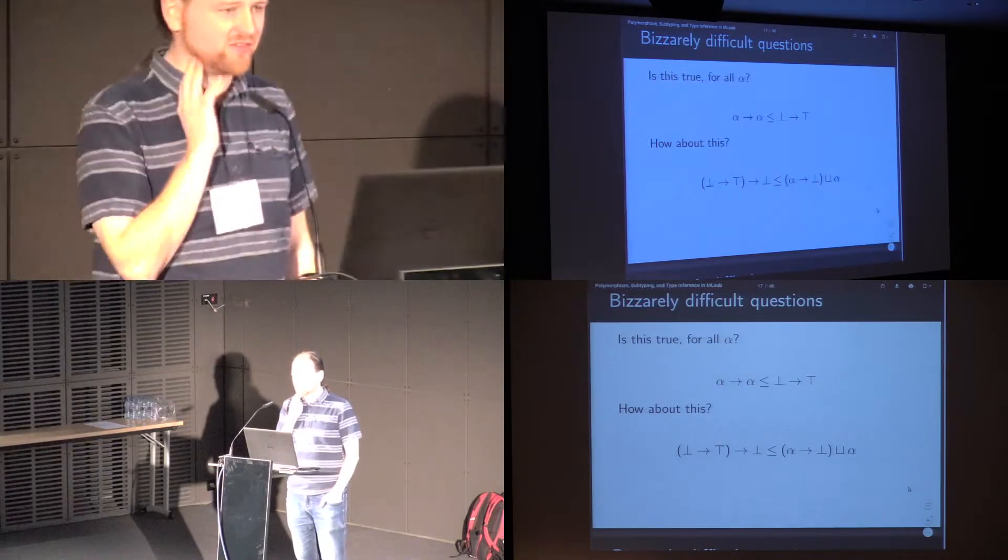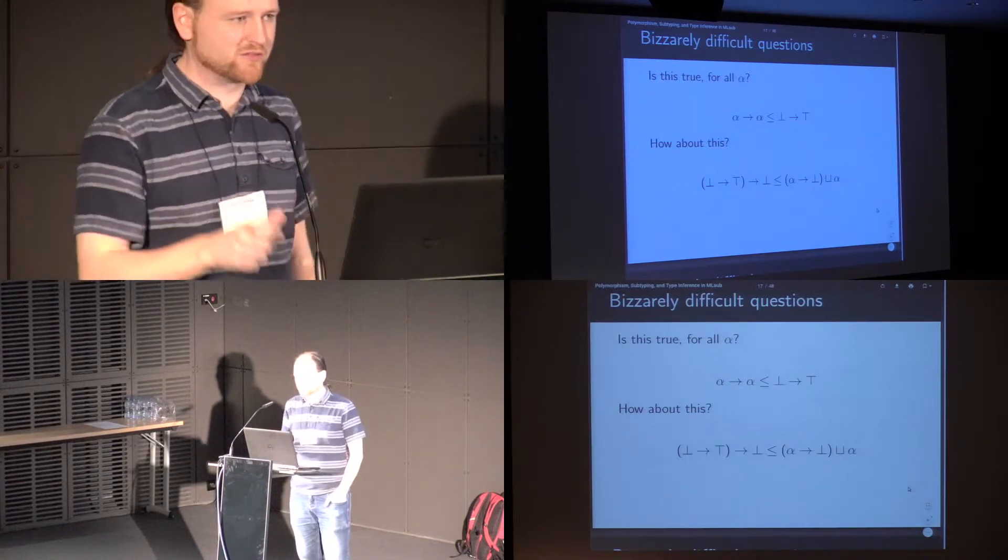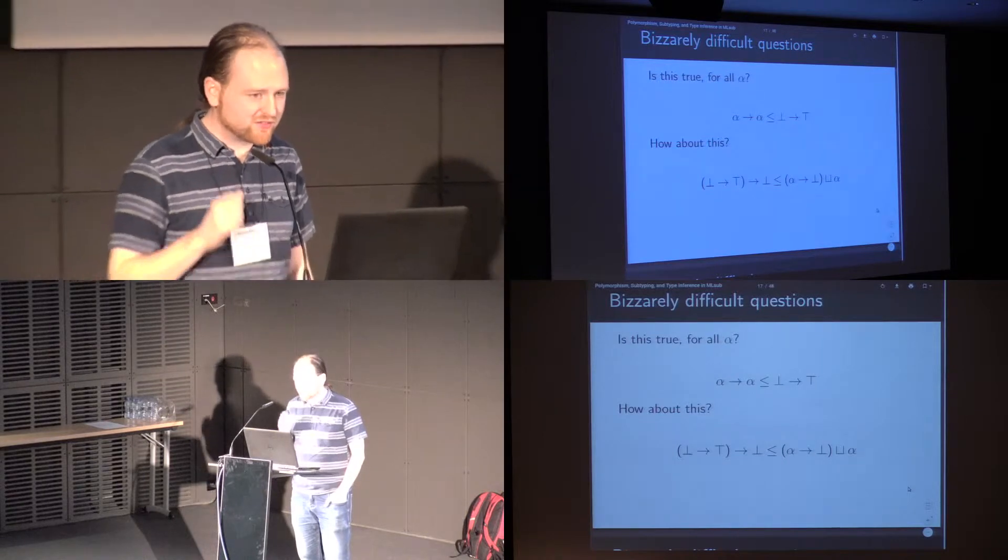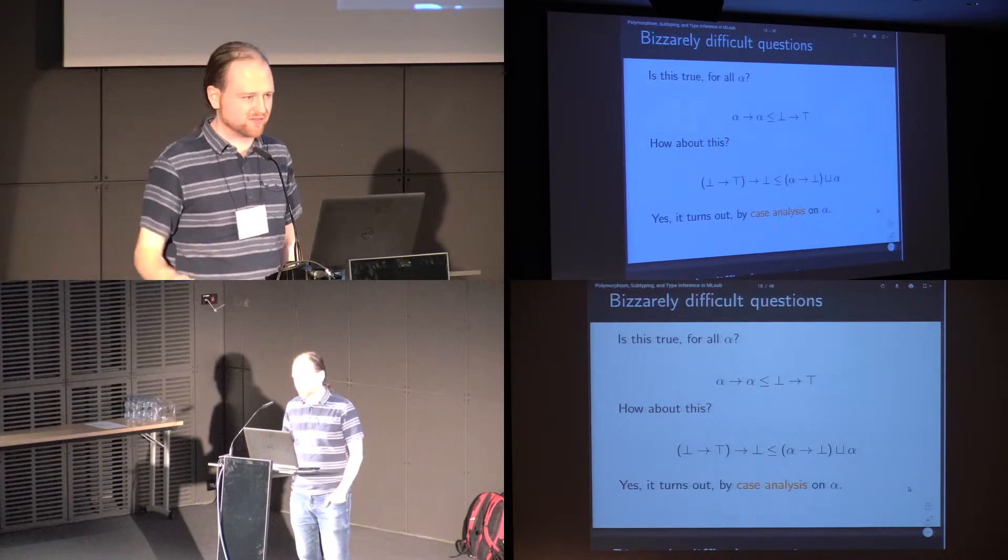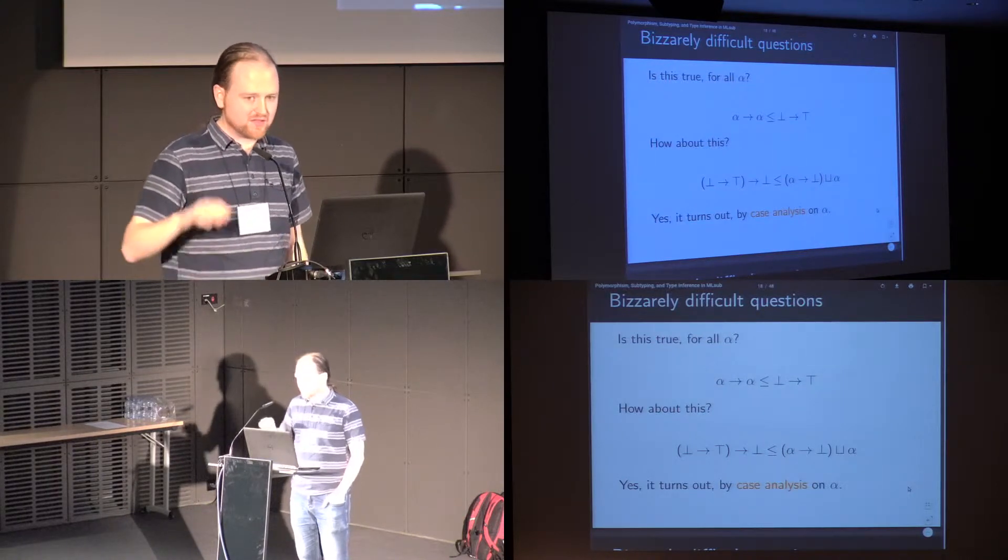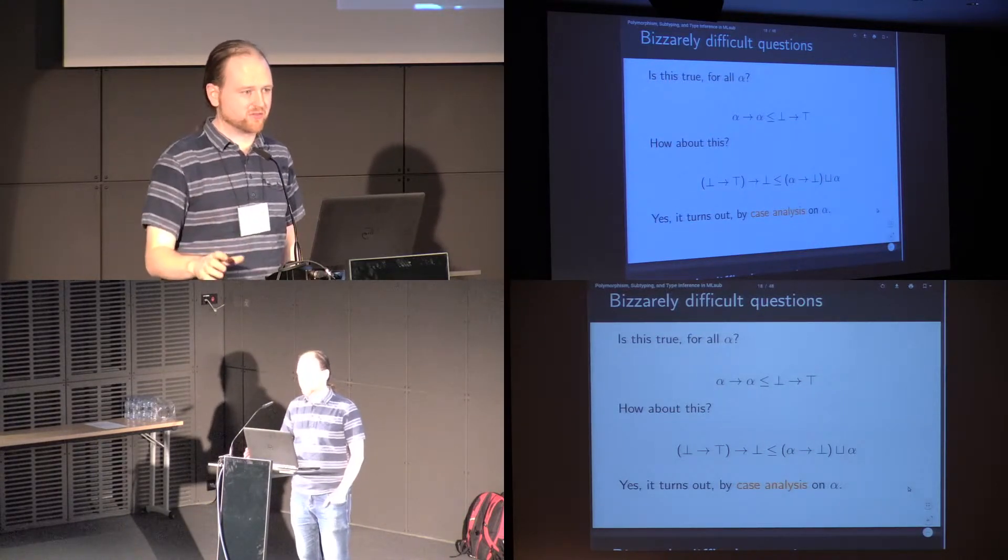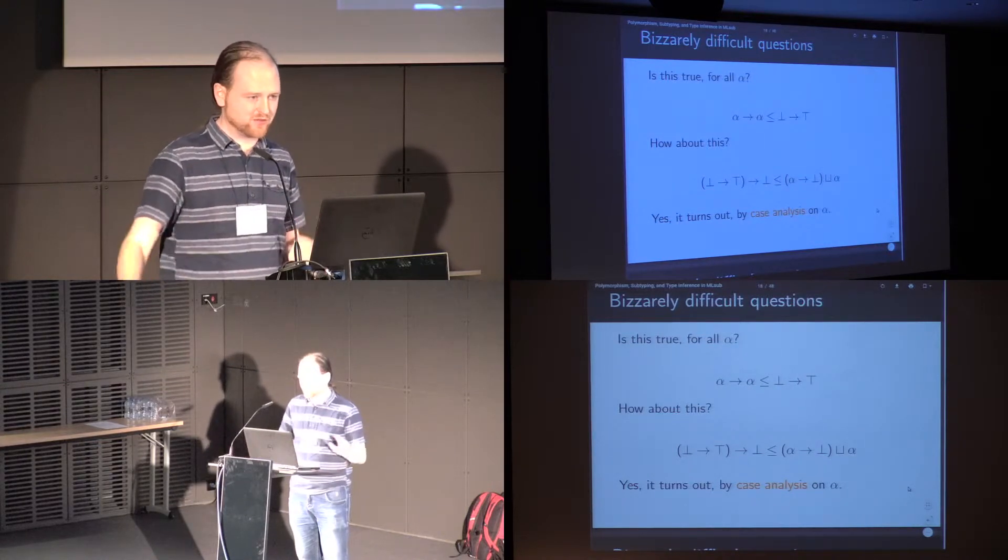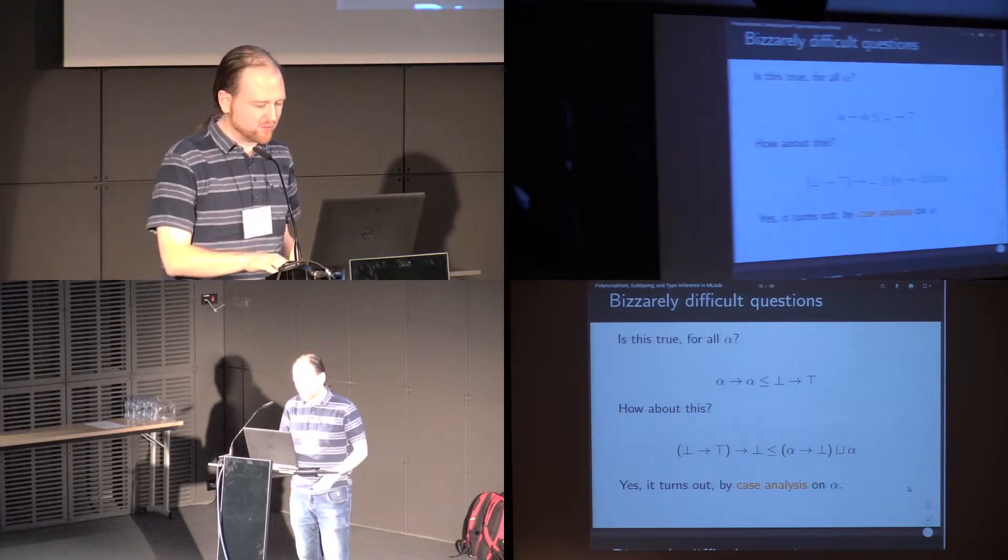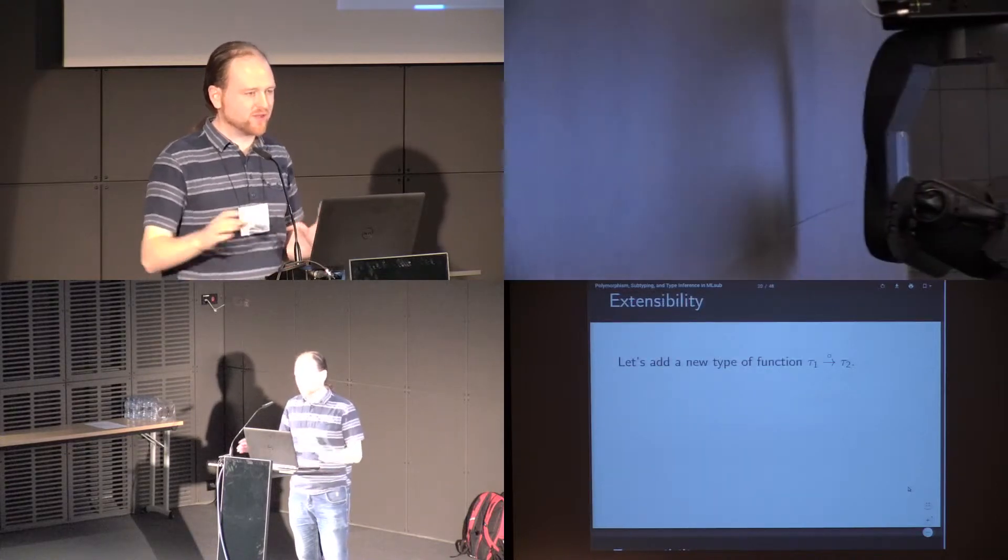And the odd thing here, the thing that makes me really doubt this is the right way to be building a type system, is that this is true by case analysis, and this is only true by case analysis. If we extend the type system, we don't change any of the types that are there, we don't change the subtyping relationships between the function types top and bottom, but simply add a new type of function.